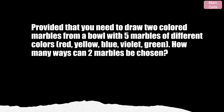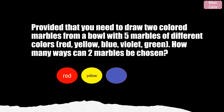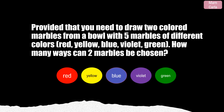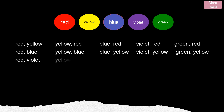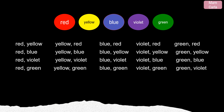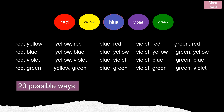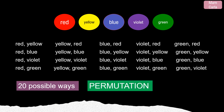Provided that we need to draw two colored marbles from a bowl with five marbles of different colors — red, yellow, blue, violet, and green — how many ways can two marbles be chosen? Let us list down the possibilities. With this illustration, there are 20 possible ways. We learned that this kind of selection is called permutation, denoted by P, or permutation of 5 taken 2 at a time.